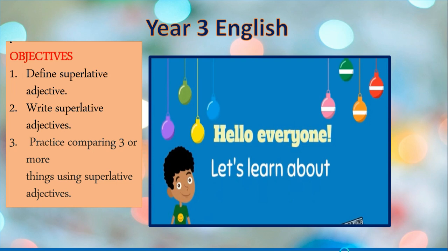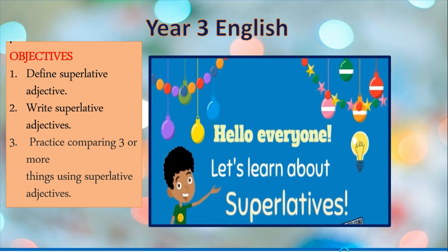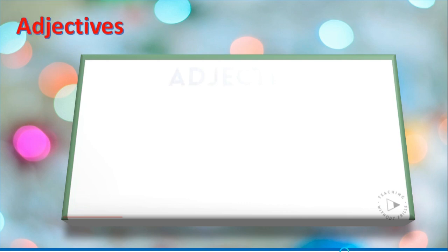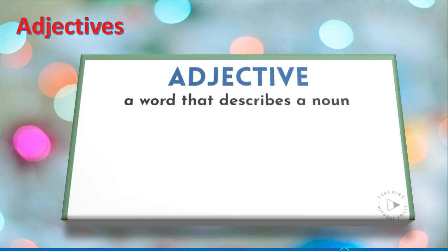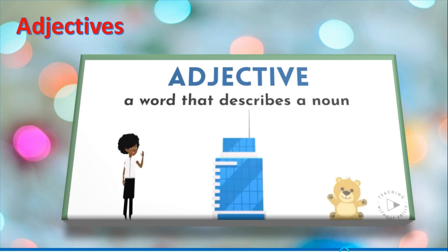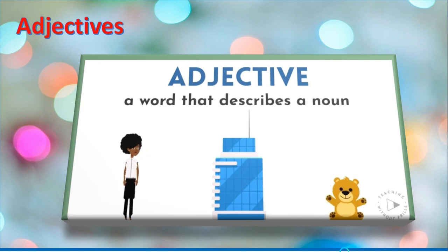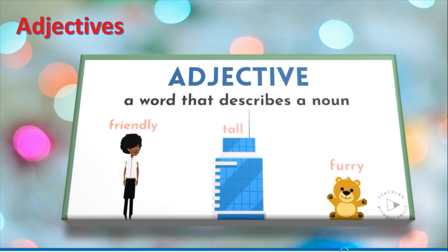Now, let's learn about superlatives. But what is an adjective? An adjective is a word that describes a noun. A noun is a person, place, or thing. Adjectives tell details about nouns — like a friendly woman, a tall building, and a furry bear.